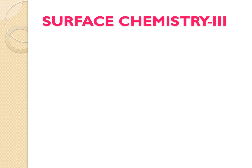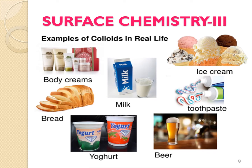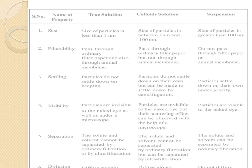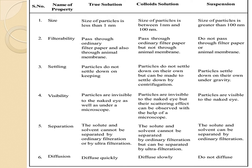Surface Chemistry Part 3. We have already discussed adsorption and catalysis in Part 1 and Part 2 respectively. From the picture, it's very clear that these are all examples of colloids in our real life. The next topic we are going to deal with is colloid. Before starting colloid, let's recapitulate true solution, colloidal solution, and suspension — which you have already read in 9th class. They can be differentiated on the basis of size, filtrability, settling, visibility, separation, and diffusion.